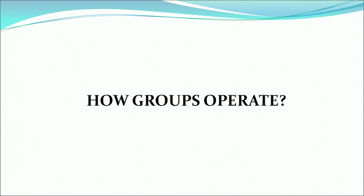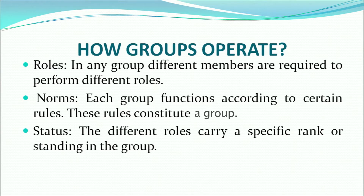How groups operate? In any group, different members are required to perform different roles. Then we have norms — each group functions according to certain rules, and these rules constitute the norms. In every group, there are different roles that carry a specific rank or standing in the group. Thus, every member has a status in the group. Roles, norms, and status make it mandatory for each group member to participate and function.